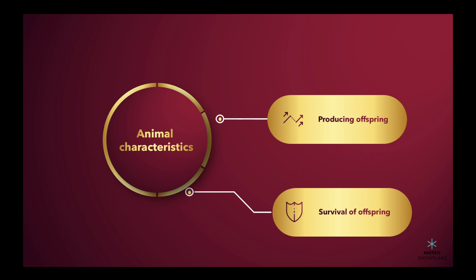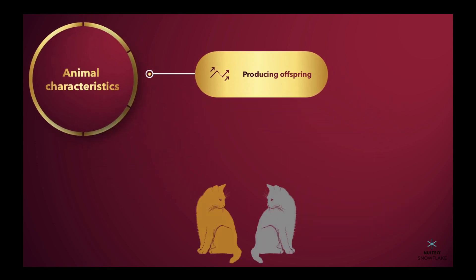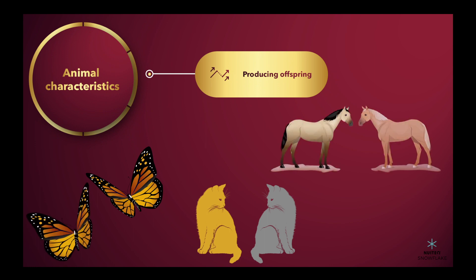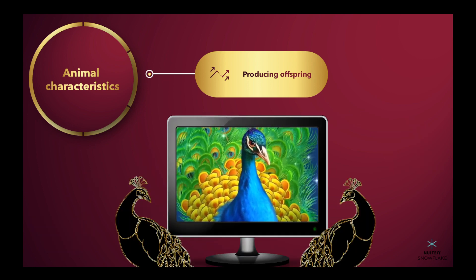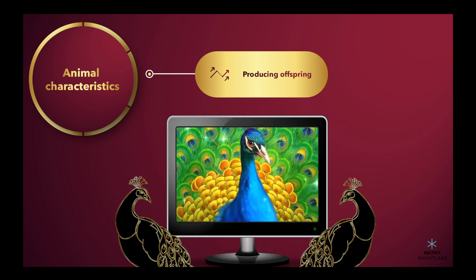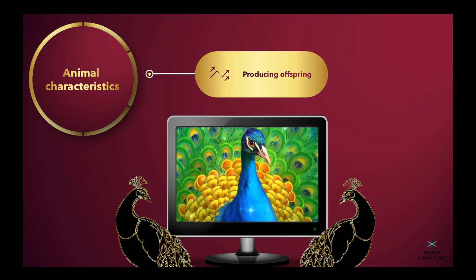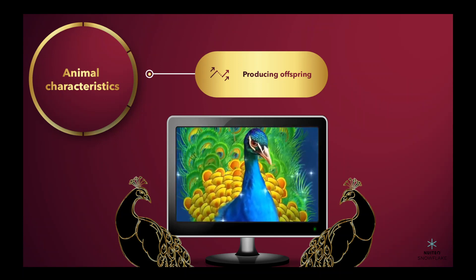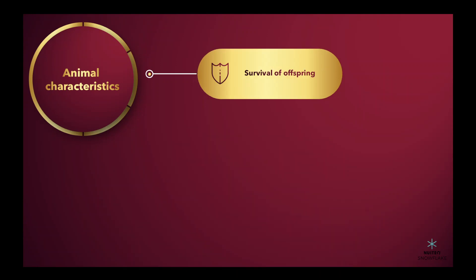To produce offspring, animals need to find a mate. Behaviors can signal that an animal is a desirable mate to the opposite sex. For example, peacocks, which are known for their beautifully colored feathers, perform little dances to attract potential mates, in which they fan out and shake their feathers.